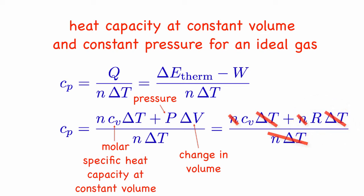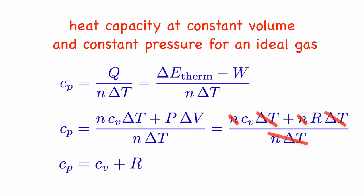Now the number of moles and change in temperature cancel out from top and bottom, and we find that the heat capacity at constant pressure is equal to the heat capacity at constant volume plus the gas constant. This equation tells us that if we heat a gas at constant pressure, only some of the heat goes into raising the temperature, while some leaves the system as work.